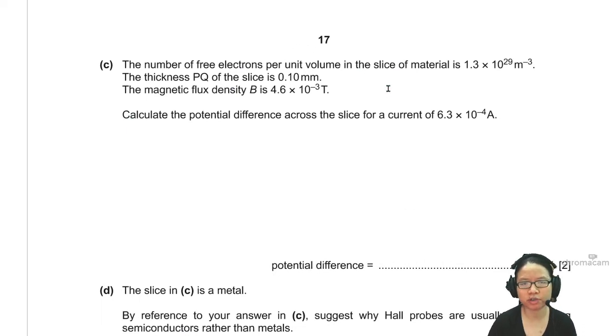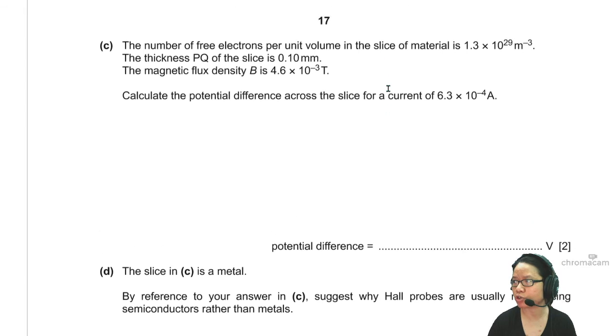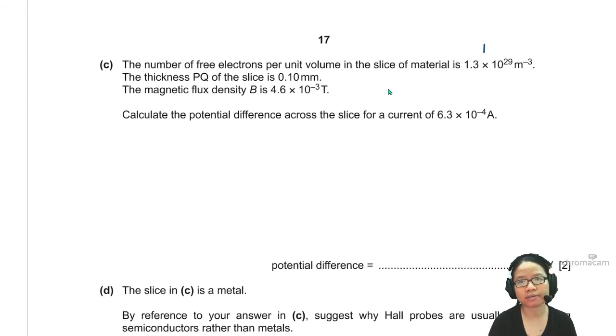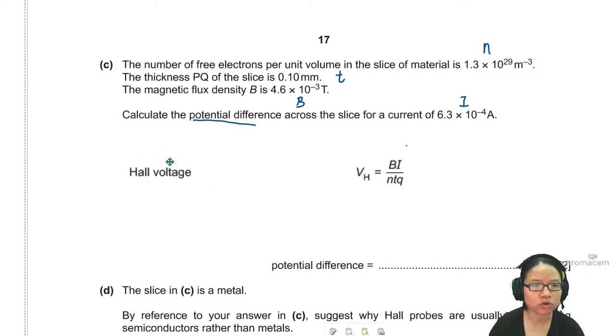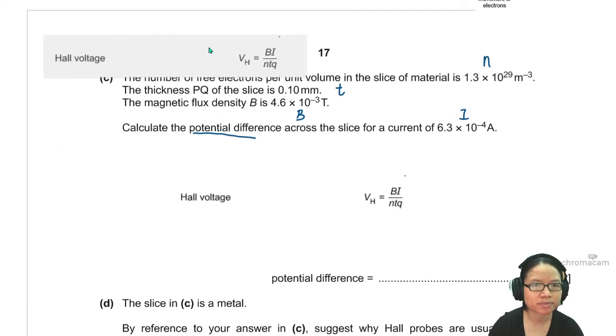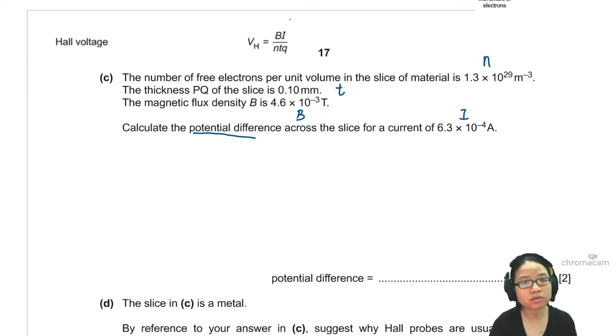The number of free electrons per unit volume in the slice of material is 1.3 times 10 to the power of 29. This is your n number density. Thickness PQ of the slice is 0.1 mm. This is T. Magnetic flux density B is okay. Calculate the potential difference across the slice for a current of this much. So this is a bonus question. By bonus, I mean you can find the equation needed inside your page tree. So the equation looks like this. I'm also doing this for the last minute people. Use this equation, can find in front.